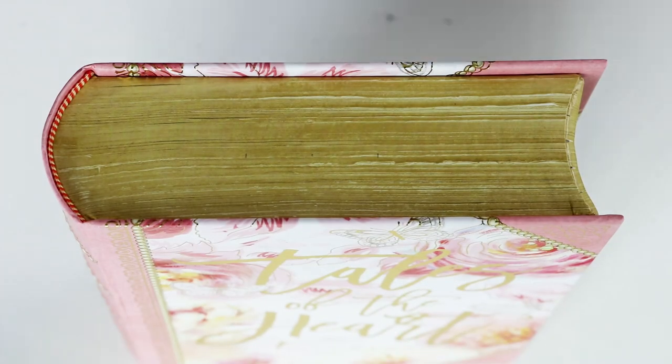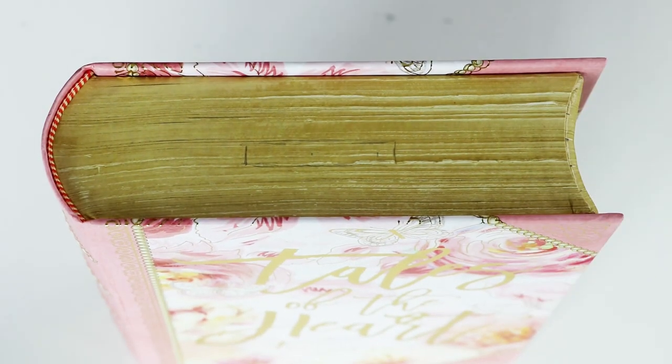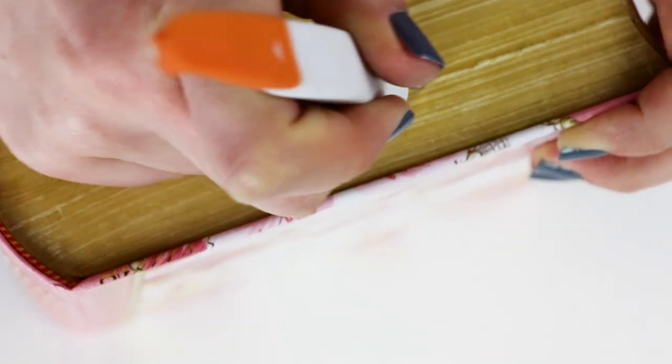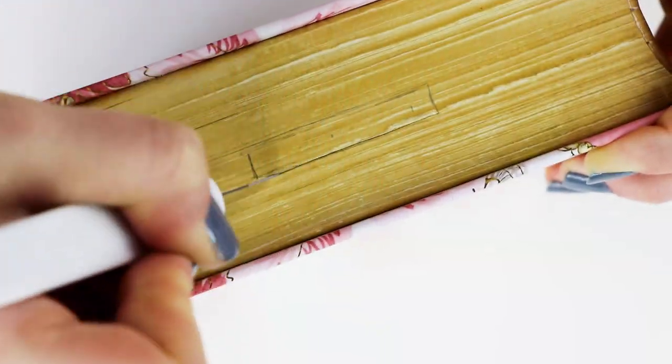So stand it up and use a ruler to mark the center on top. Draw a rectangle using a pencil and then grab a craft knife with a sharp blade. Very carefully use your craft knife to cut out the rectangle.